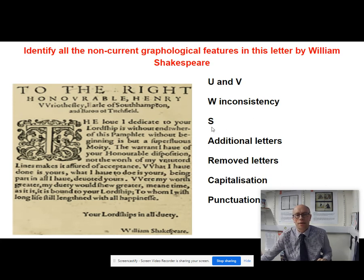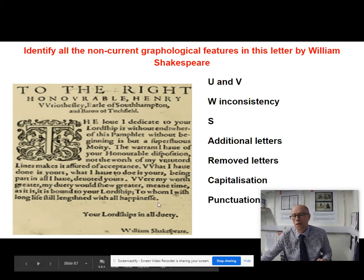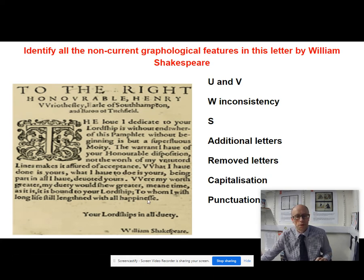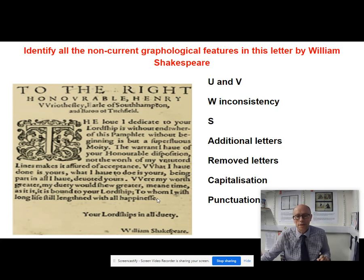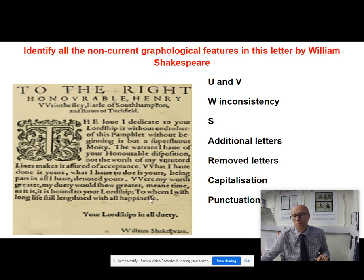We have this pesky long S, which does make it difficult for us to read because we're constantly thinking — is this an F or is this an S? The rule being applied is that if you've got an S at the front or middle of a word — in the initial or medial position — then you use a long S. And if you've got an S at the end of a word, like a plural, then it's a small S. So look at the last word — 'happiness' — because the S is in the medial position and not right at the end of the word, it's put forward as a long S.